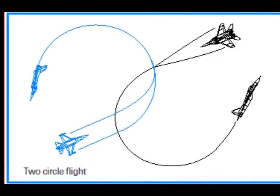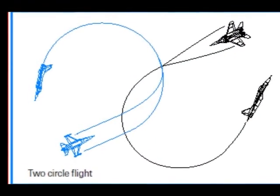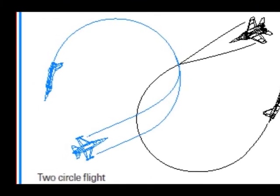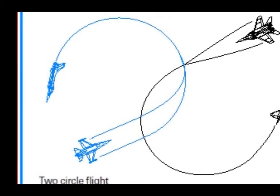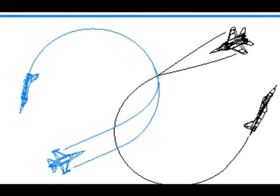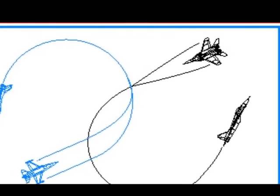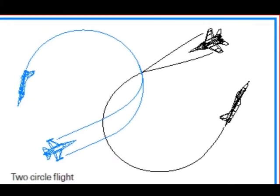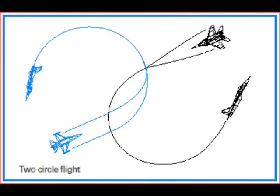Now this graphic shows you the two-circle flight. The options that we discussed at the pass can result in either one-circle or two-circle flight, which is one of the most common endings of a head-on BFM. If both fighters start a lead turn, then the fight will go two-circle as shown in this graphic, which means that two distinct turn circles are created.